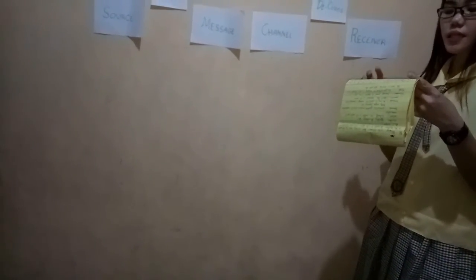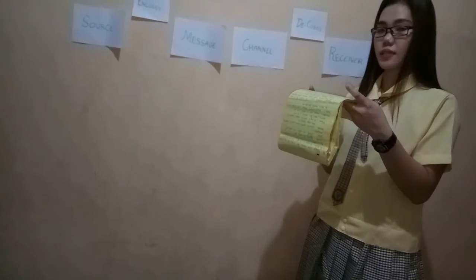R stands for receiver — the person who gets the message sent in the process. The receiver must also have very good listening skills. The advantage of the model is that it makes clear that message and medium are aligned with the recipient. The language skills given in Berlo's model are: speak, present, read, write, and listen.